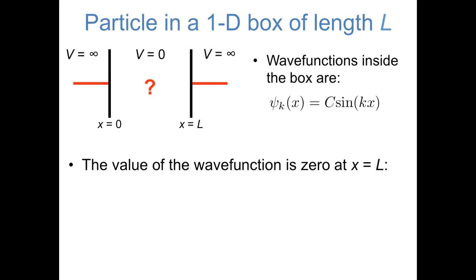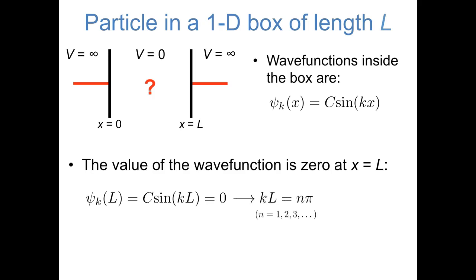Let's look next at the other boundary condition, the requirement that the wave function is zero at x equals L, the right side of the box. If we plug in x equals L, we find that c times the sine of kL has to be equal to zero. c, which is basically a normalization constant, is not going to be equal to zero. So we know that the sine of kL has to equal zero. One possibility is that k itself equals zero, but that's not a very interesting possibility — it just means there's no particle there and the wave function can't be normalized. But keep in mind it's not just the sine of zero that equals zero; it's also the sine of pi, and the sine of two pi, and the sine of three pi, etc. So what this equation is telling us is that k times L has to be some integer number times pi — we'll call it n pi, where n equals one, two, three, etc. And if we rearrange this equation, we find that k has to be equal to n pi over L.